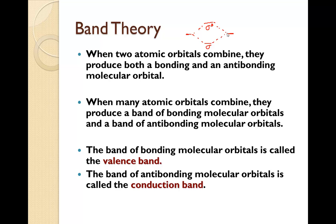When many atomic orbitals combine, they produce a band of bonding molecular orbitals and a band of anti-bonding molecular orbitals. So if we have lots of sets of these, they start to blend together, and so we have a band of the sigma and we have a band of the sigma star.